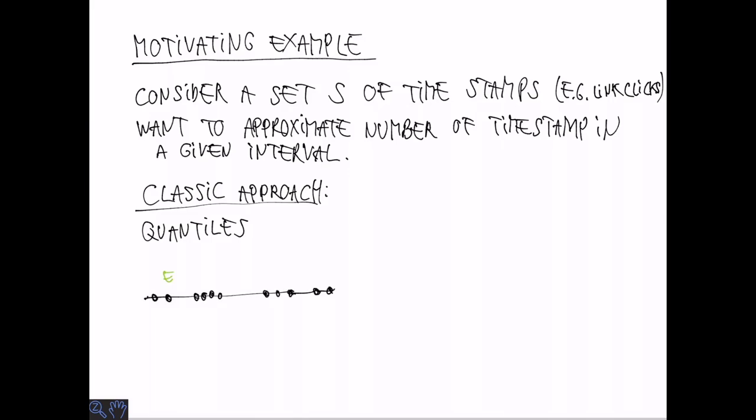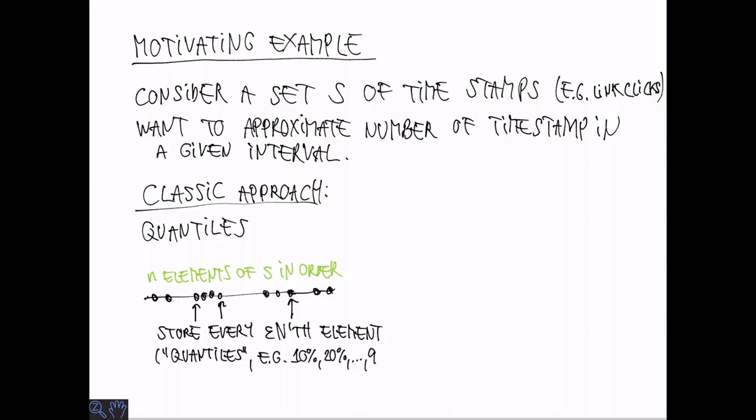Suppose there are N elements and consider them in sorted order. To construct the quantiles, we take every epsilon N elements and store them. For example, if we set epsilon equal 0.1, we get the 10%, 20% up to 90% quantiles in this way. The quantiles require linear space to compute, but only 1 over epsilon space to store.